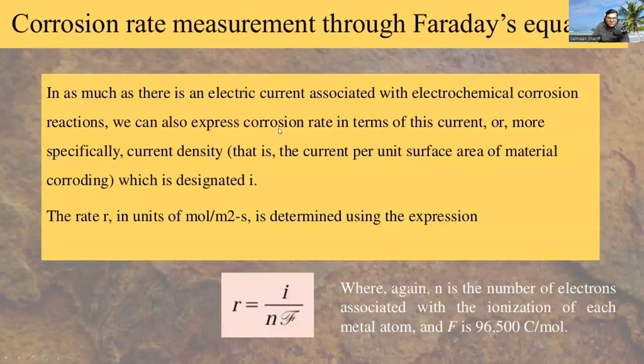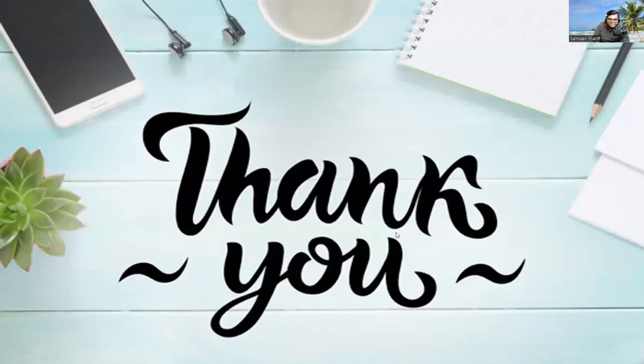Another equation is corrosion measurement through Faraday's equation. This equation is R equal to I divided by N times F, where the rate R in units of mole per meter square per second is determined using the expression. Thank you.